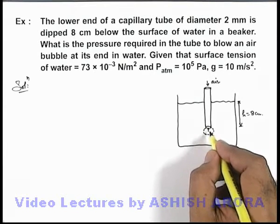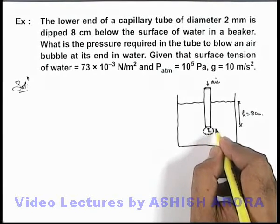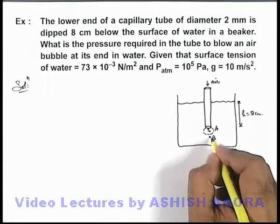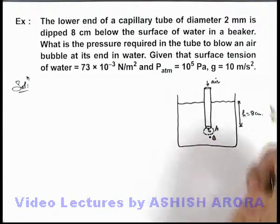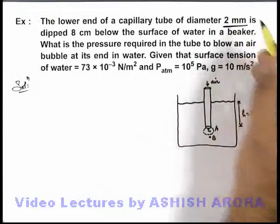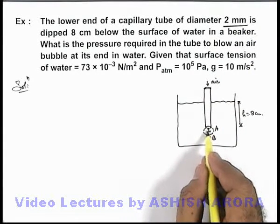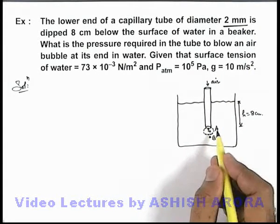If there is a point A inside the bubble and a point B just below the bubble, and the size of bubble to be very small, because we are given that the diameter of tube is 2 mm, the radius up to which it is required to blow the bubble is 1 mm.